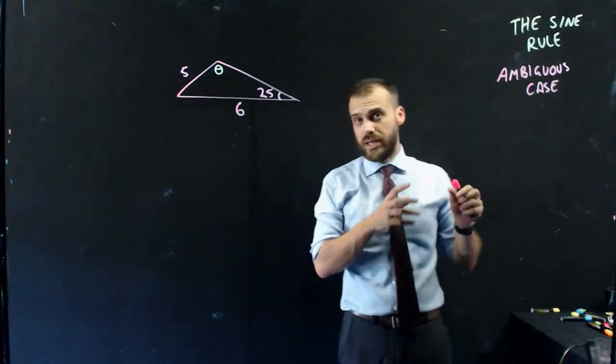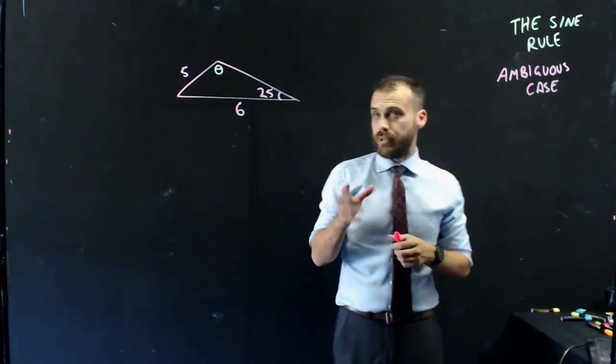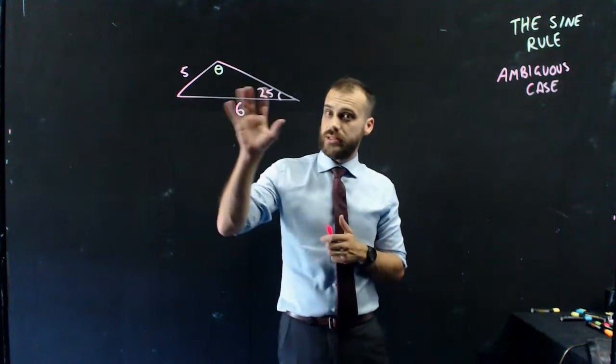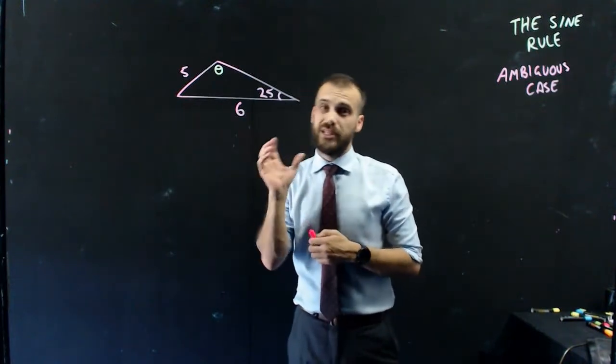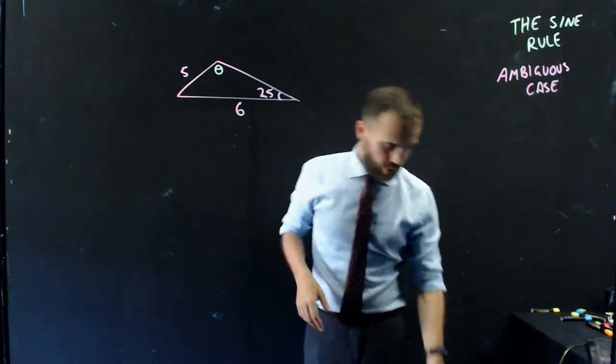Here we are, we're doing the sine rule, something called the ambiguous case. Now, believe it or not, there's actually two answers to this question. So we're going to take a look at the question and figure out why.